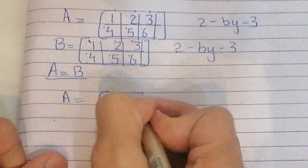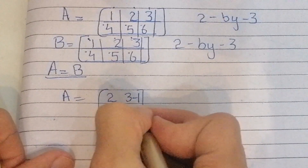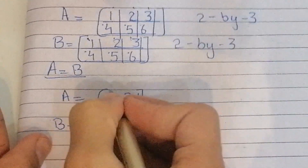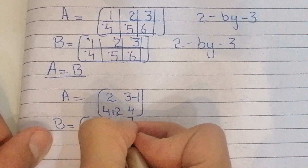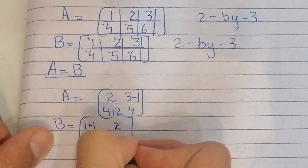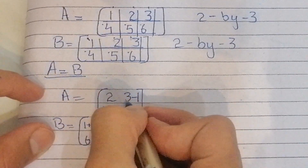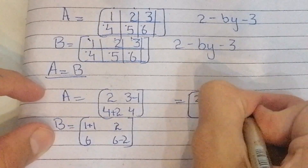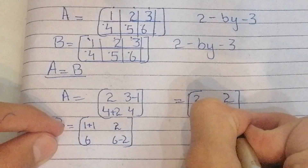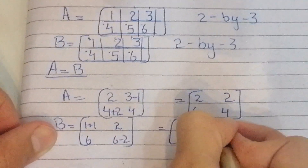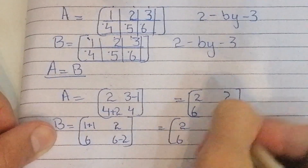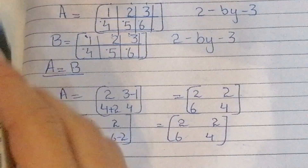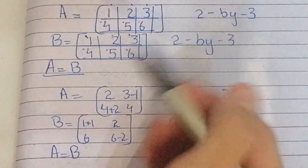Here is a more complex example. Matrix A has entries: 2, 3, −1, then 4+2, and 4. Matrix B has entries: 2−1 from 3, and corresponding values. Calculating: 4+2 = 6, and 6−2 = 4. In matrix B: 1+1 = 2, 2, and 6, and 6−2 = 4. Since all corresponding entries match, these two matrices are equal.